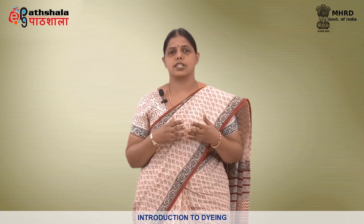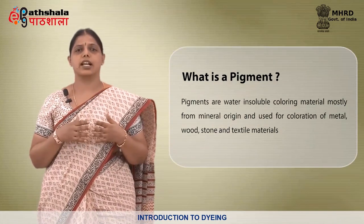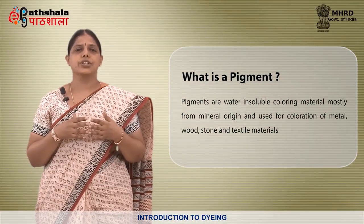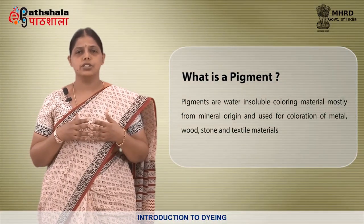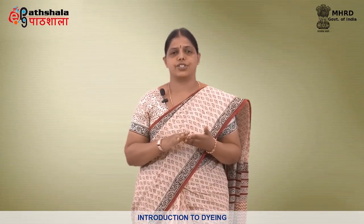There are two types of dyes — one is natural and the other one is synthetic. Natural dyes are extracted from natural substances such as plants, animals or minerals. Synthetic dyes are made in laboratories. What is a pigment? Pigments are water insoluble coloring material mostly from mineral origin and used for coloration of metal, wood, stone and textile materials. The insoluble colored particles are held on the surface of the fabric with a binding agent. The dye is applied in the form of a solution whereas the pigment is applied in the form of a paste.